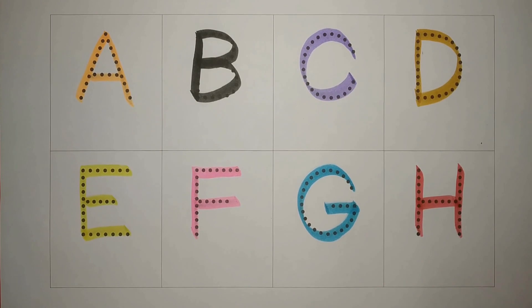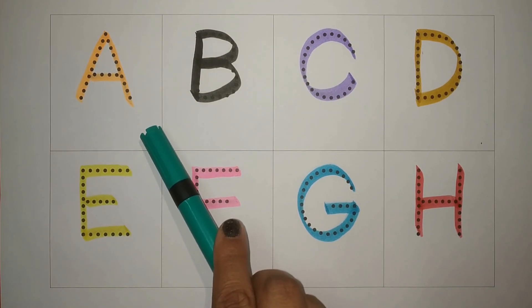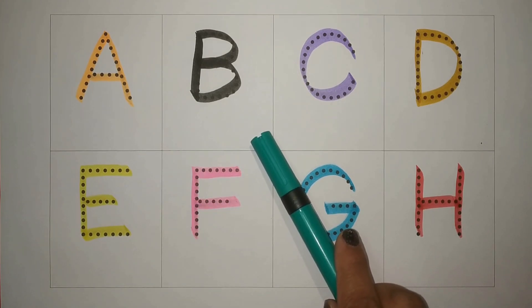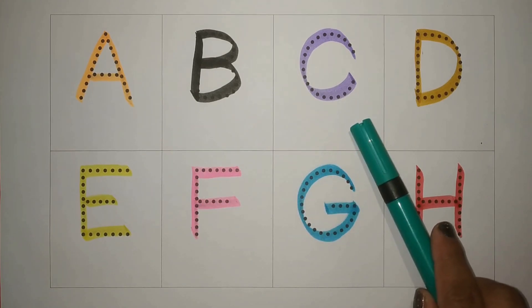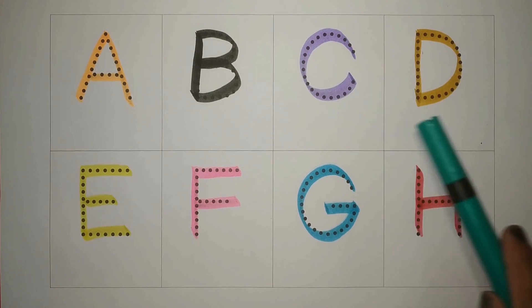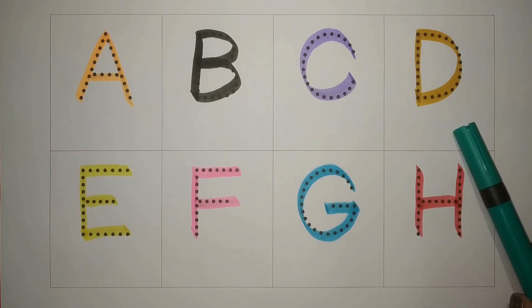Let's revise, chalo phir se kertate hai. A, orange, A for apple, B, black, B for ball, C, purple, C for cat, D, mustard, D for dog.